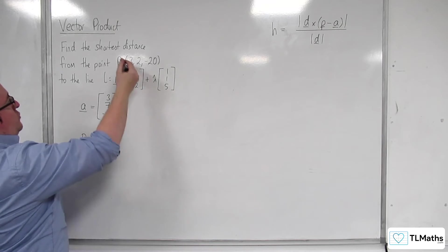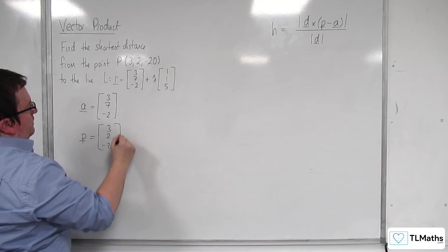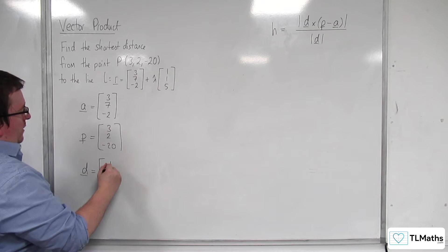P is the position vector of capital P, so (3, 2, -20). And D is the direction vector of the line, which is (1, 1, 5).